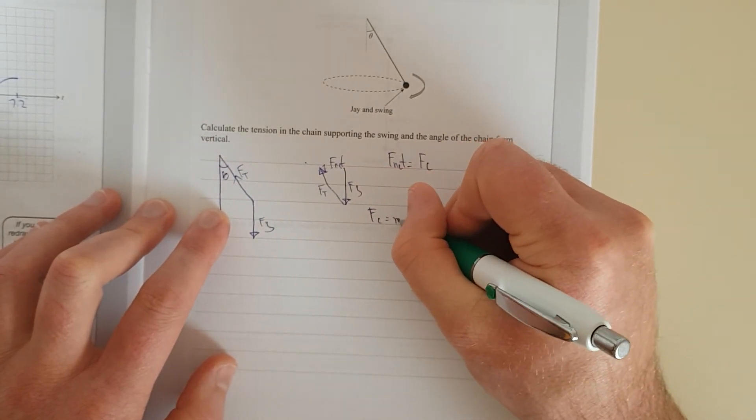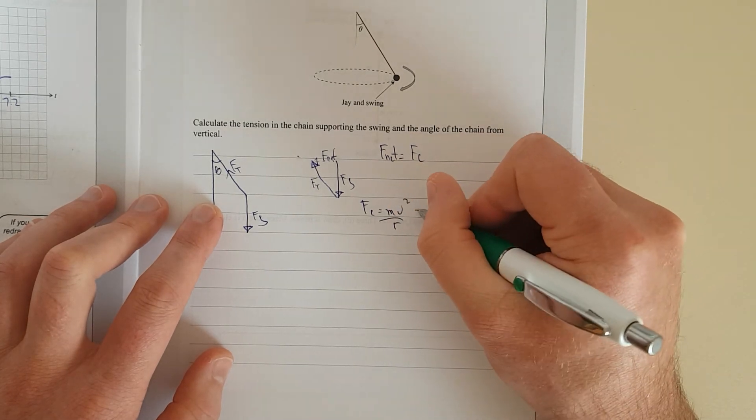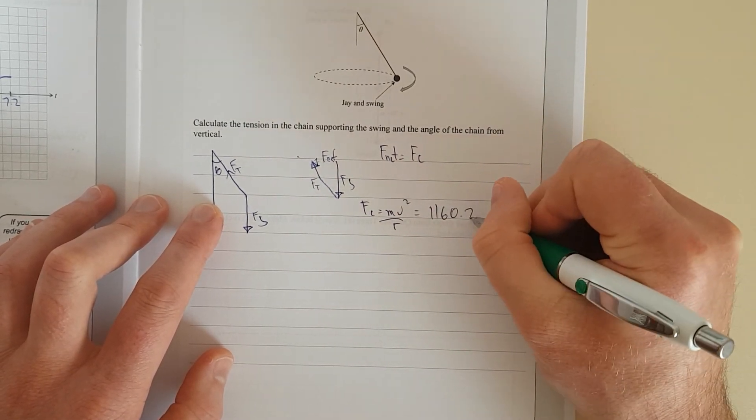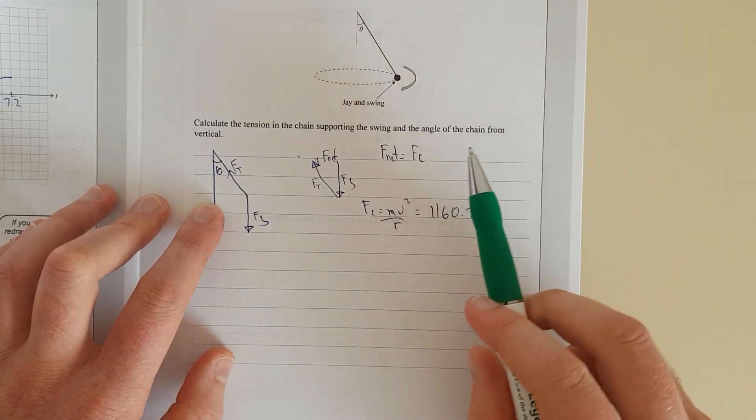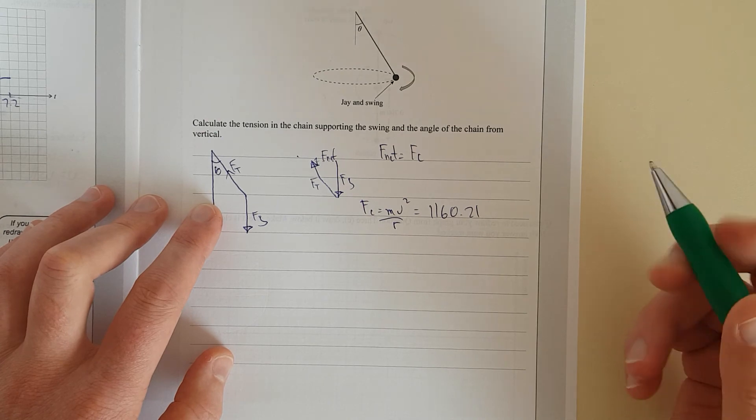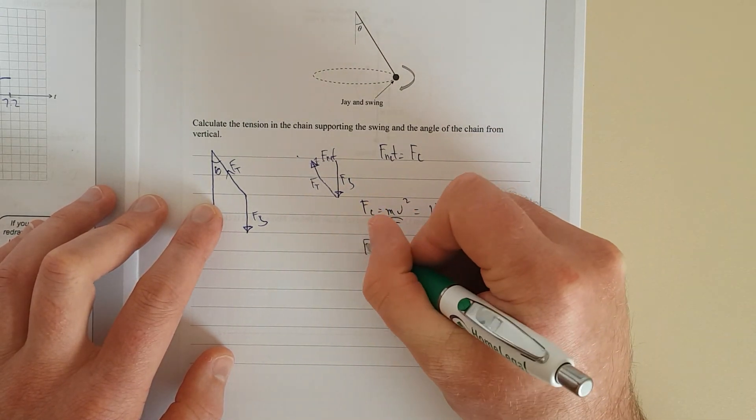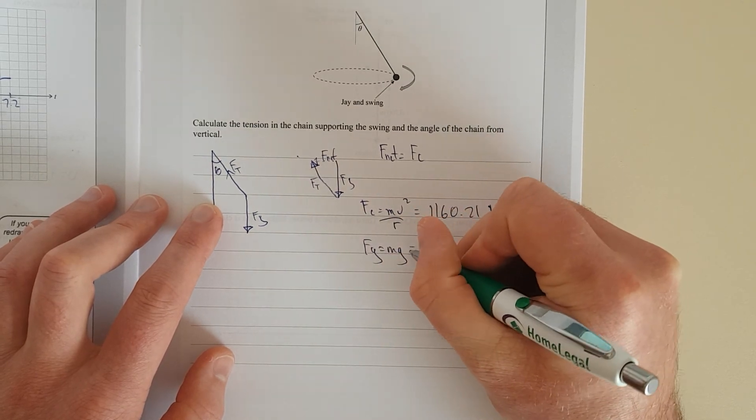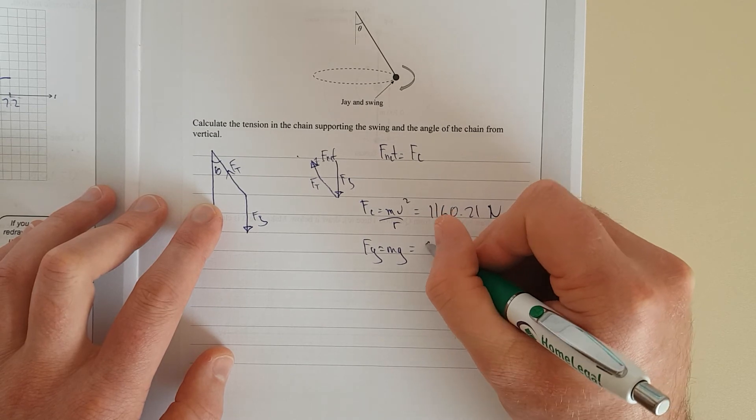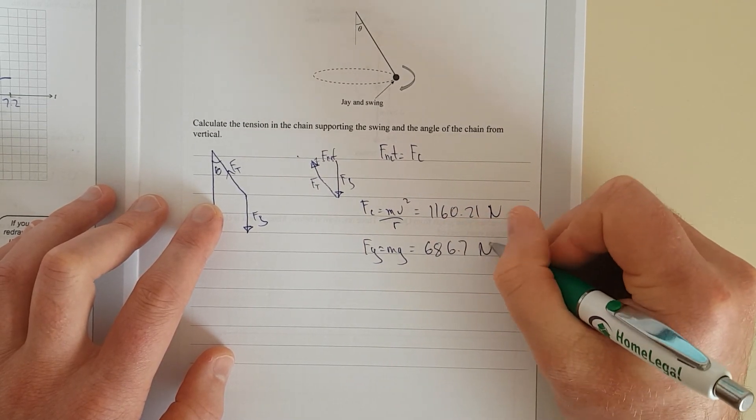Now this is calculation. Fc equals mv squared over r. And that is equal to once you plug in the numbers 1160.21. Because our mass 70 kilograms. Velocity it's 2.61. Radius 0.411. And that is newtons. Our gravitational force Fg is equal to mg. So it's 70 times 9.81. Because you've got to round up. You have 3 significant figures for level 3. 686.7 newtons.